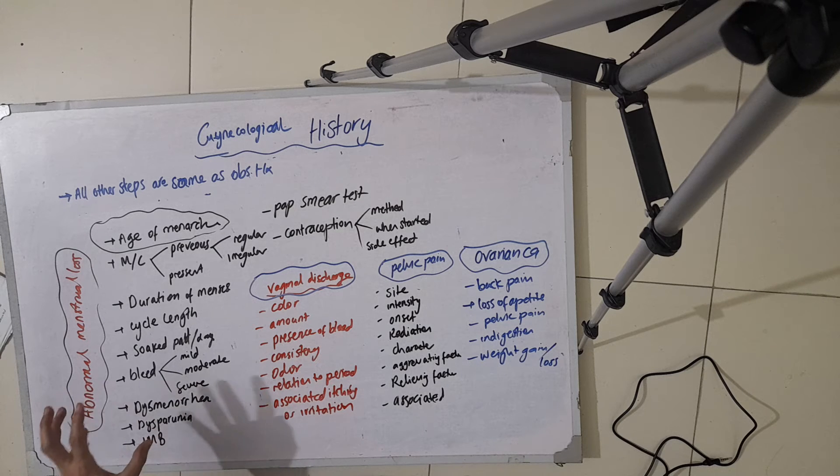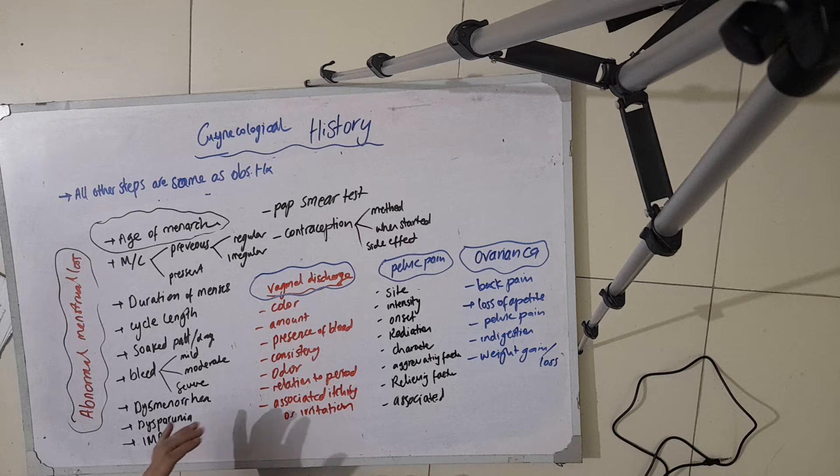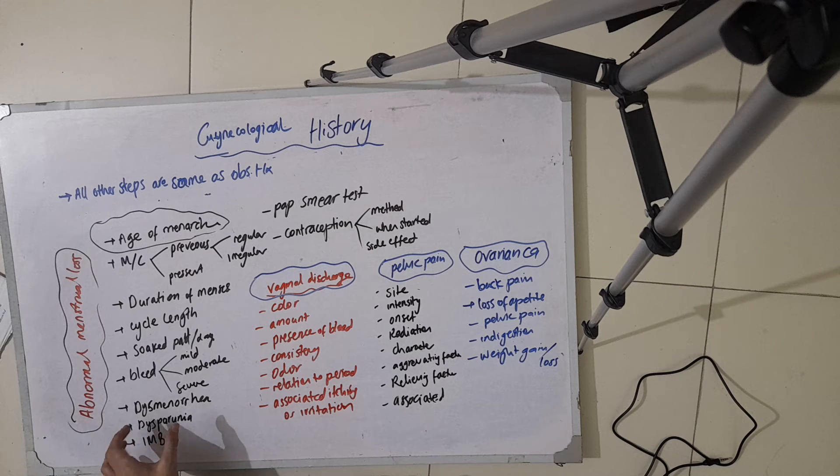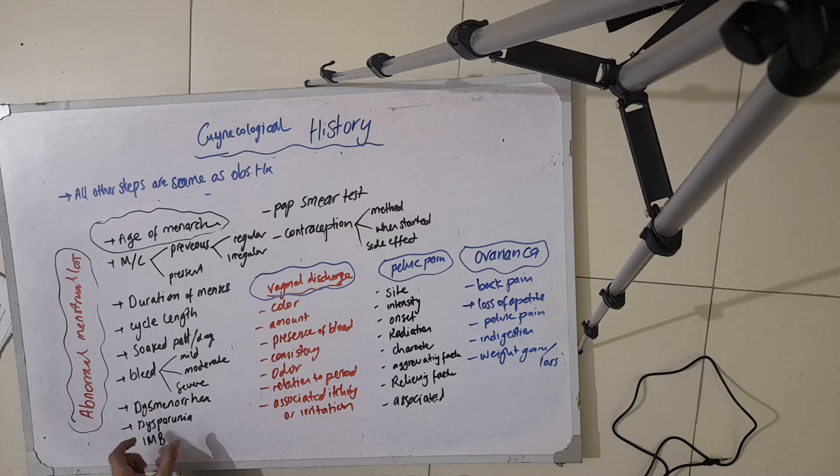You also ask about bleeding, whether it is mild, moderate, or severe. You also ask about any complaints of dysmenorrhea, dyspareunia, or intermenstrual bleeding.